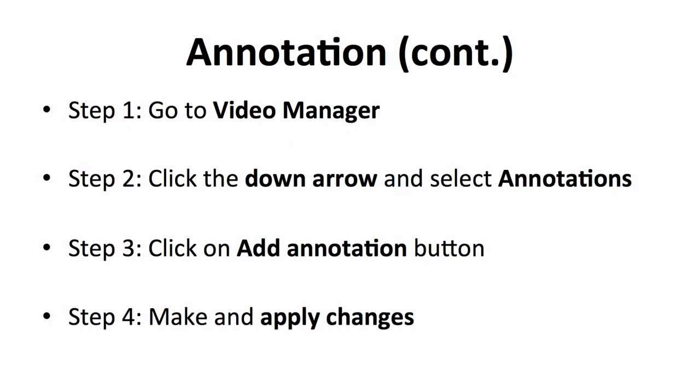To add annotations on your video, you will first need to go to the Video Manager. Click on the down arrow and select Annotations. This is the place where you can manage all the annotations for your videos. When you are on the annotation page, you will see a page with all your videos. Beside each video, there is an Add Annotation button. Select the video that you wish to add an annotation to and click on the button beside the video. You'll then be redirected to the page where you can edit and create your annotation. You can decide when and where you want the annotation to appear in your video, and of course, the duration of the annotation. Make the necessary changes and apply them.